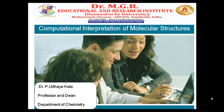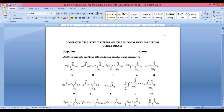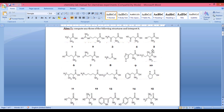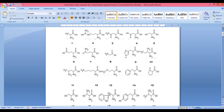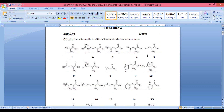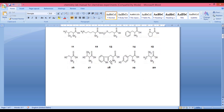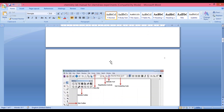Let us start the experiment. Let me show the lab manual first. The aim of the experiment is to compute any three of the following structures and interpret them. We are going to take structure 5, structure 12, and structure 18 — from easy to a more complicated level. You can pause the video and note down the structures manually or in your lab manual.